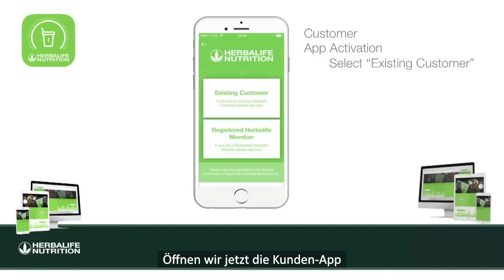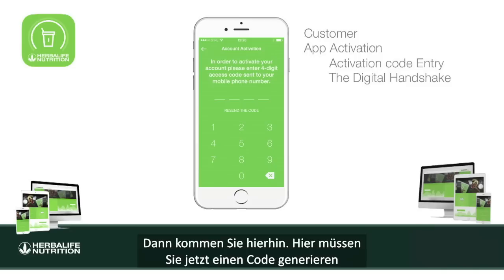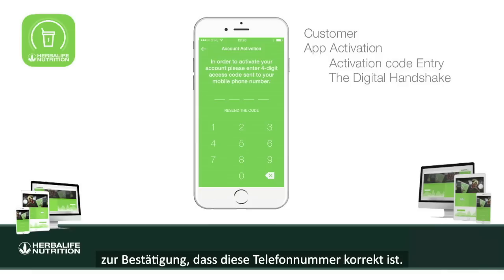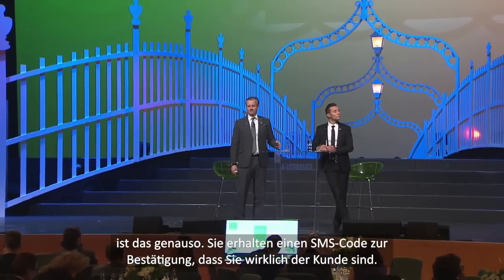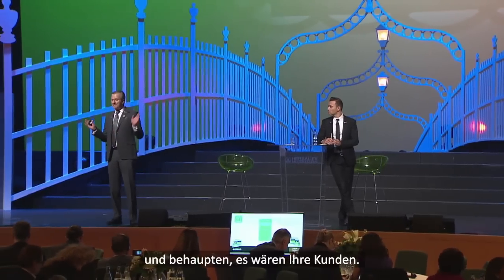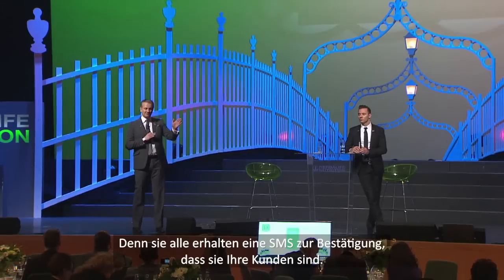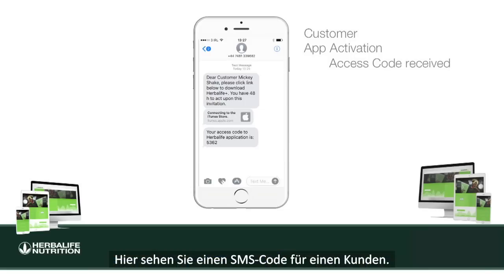Now let's open the customer app and log in as the new customer you just added. Go in with a name and phone number, and then you'll need to generate a verification code. This is like when you install WhatsApp — you get an SMS code to input to confirm it's really that phone number. This way, someone can't add 50 people they know and pretend they are customers, because those people would have to confirm via SMS. We call this process the digital handshake.